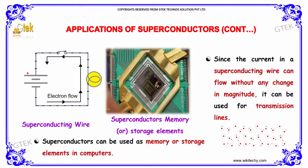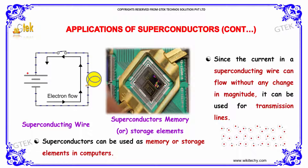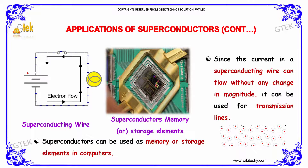It is used for superconducting wires and superconducting memory chips. The current in a superconducting wire can flow without any change in magnitude and it can be used for transmission lines. Superconductors can also be used as memory or storage elements in computers.